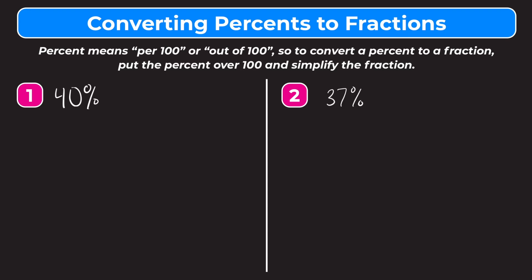Let's try number one. We have 40%, so the first step is to put the percent over 100. We're going to write that as 40 over 100. Now our next step is to simplify the fraction if we can. If you notice, both the numerator and denominator are divisible by 20. So if we do that, 40 divided by 20 is 2 and 100 divided by 20 is 5. So our final answer is 2/5. 40% converted to a fraction is 2/5.